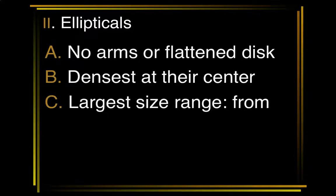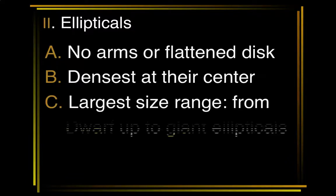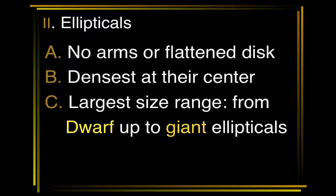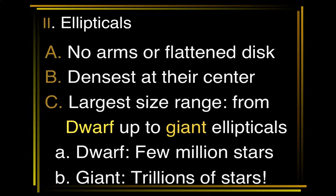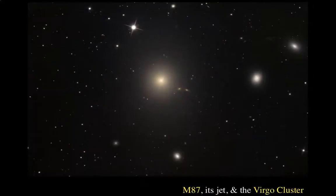All spiral galaxies are large — we've never found a dwarf spiral. All irregular galaxies are small; if they were any bigger, gravity would bring them together into a spiral or an ellipse. But ellipticals run the entire gamut, from the very smallest galaxies we know of — called dwarf ellipticals — up to the monsters, the very largest galaxies, like the megacities of the universe: the Tokyos, the São Paolos, the Shanghais. Those giant galaxies can actually have trillions of stars. Our Milky Way is a big galaxy with about 200 billion stars, but these are the true monsters of the universe.